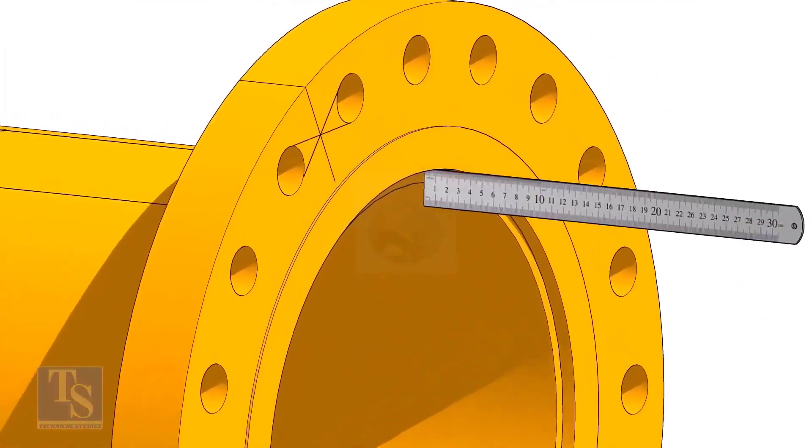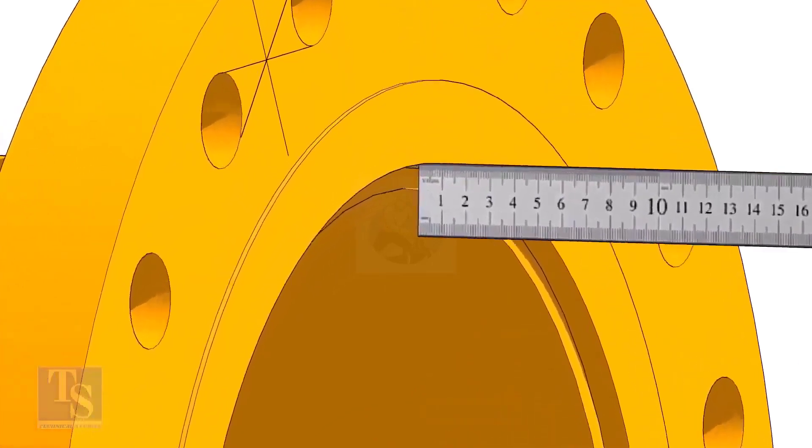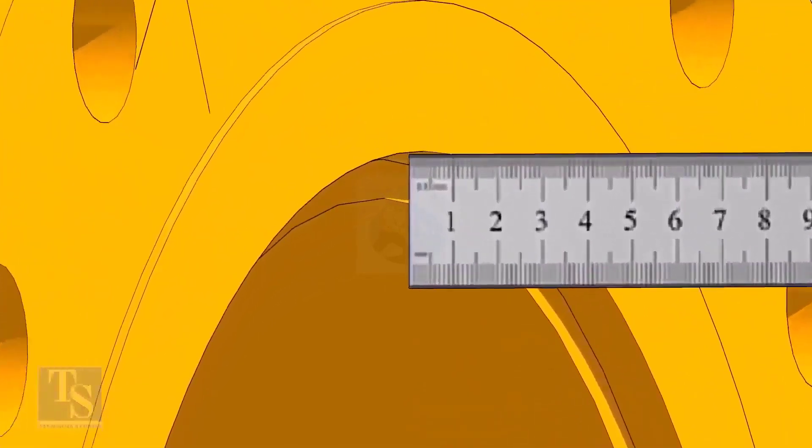Fix the distance between the flange face and the pipe face. Usually, this measurement is equal to the thickness of the pipe.